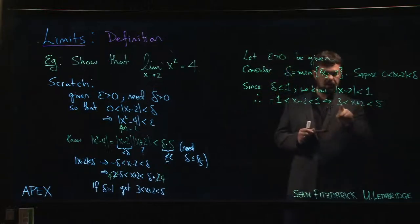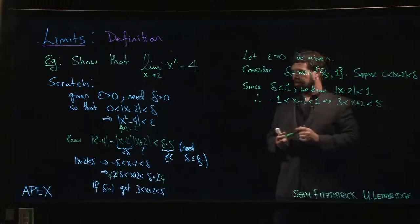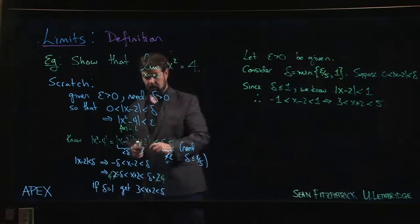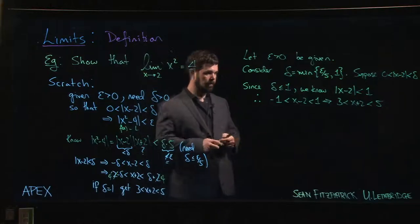So x + 2 is between 3 and 5. In particular, it's positive, because it's bigger than 3. That's going to be relevant because we have this absolute value here that we want to make sure we've accounted for.